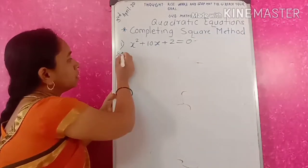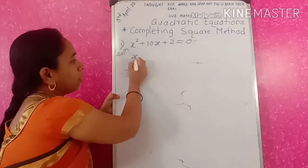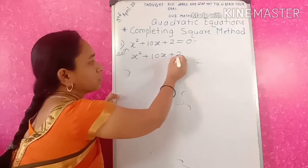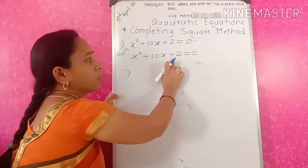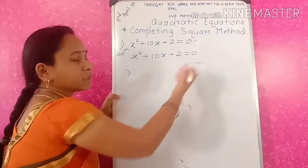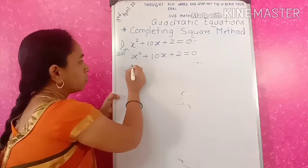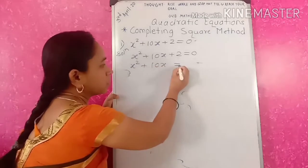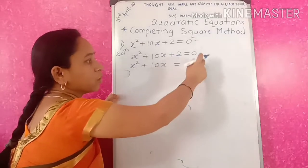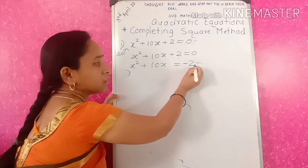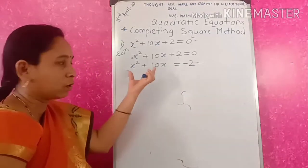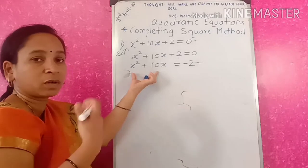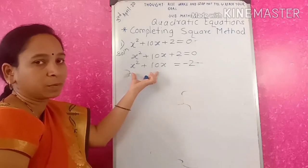The first step to solve this equation: x squared plus 10x plus 2 equals 0. We will transfer the constant term to the other side. So x squared plus 10x equals — this plus 2 will go to that side and become minus 2. Now on the LHS, there is a binomial.